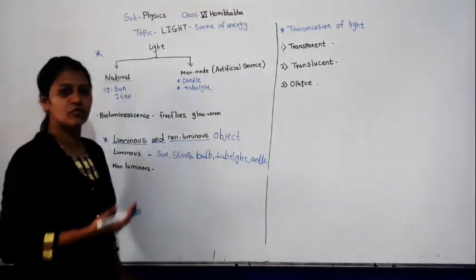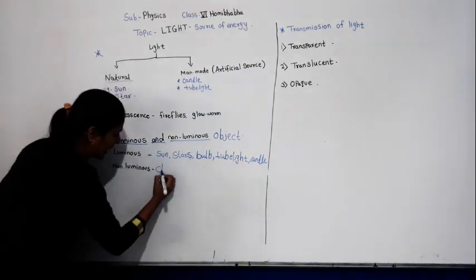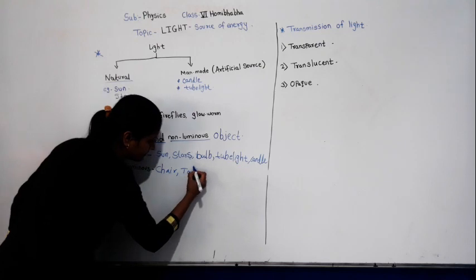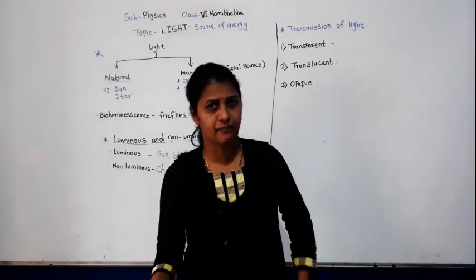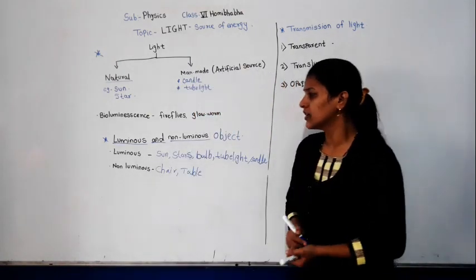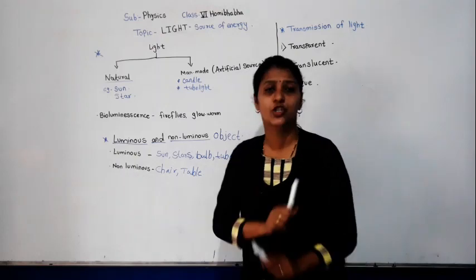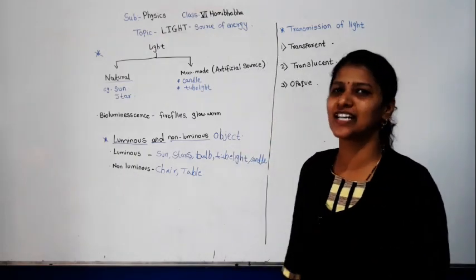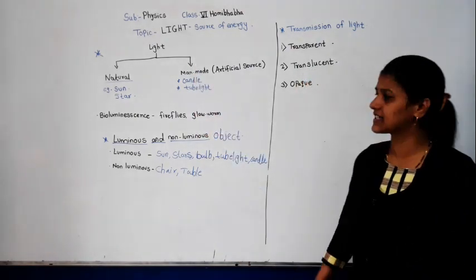Non-luminous objects are those which do not emit light. For example: chair, table, paint — you can write a number of examples. So the object that emits light is called luminous, while the object which does not emit light is called a non-luminous object.